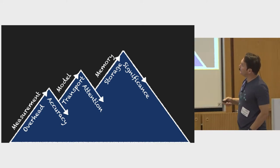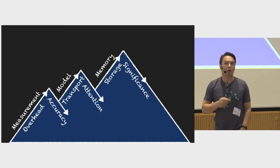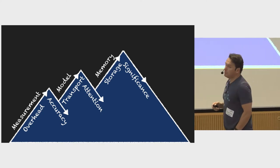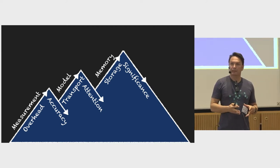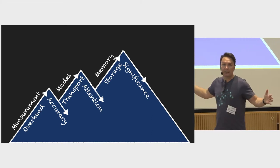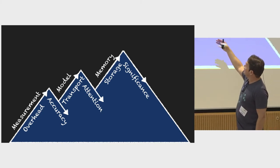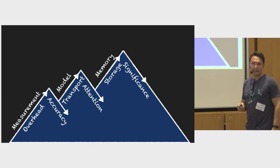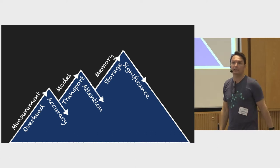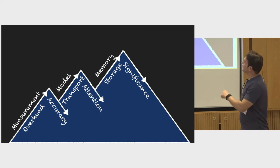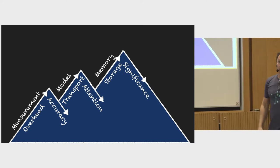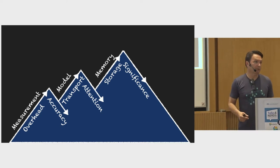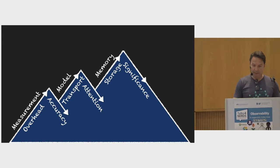What do we need? The problem with measurement is: the more measurement you have, the higher the overhead — and as overhead goes up, accuracy goes down, because you perturb the system. For models: the bigger the model, like tracing with a hundred or two hundred fields, the more your attention dwindles. You can't focus on everything. You create another problem at the back end — I'm going to send you thousands of data points, but now you have to figure out which ones matter. With memory and storage: the more memory you have of a system, the storage increases, and you can't figure out what's significant because you have memory of everything.